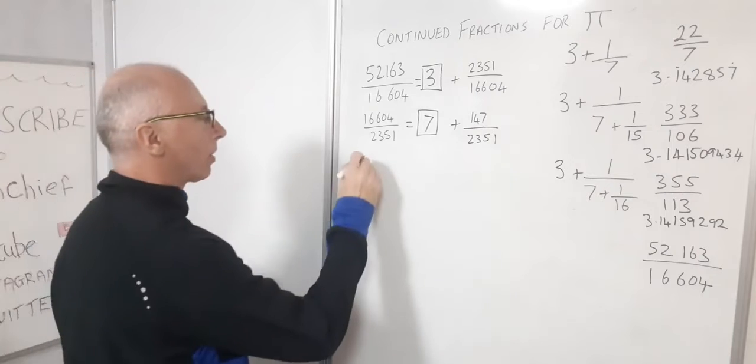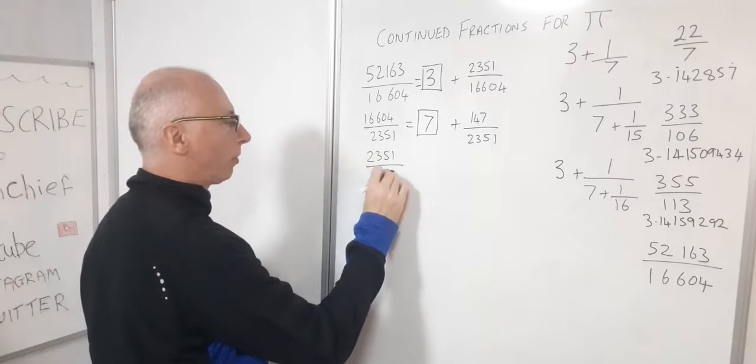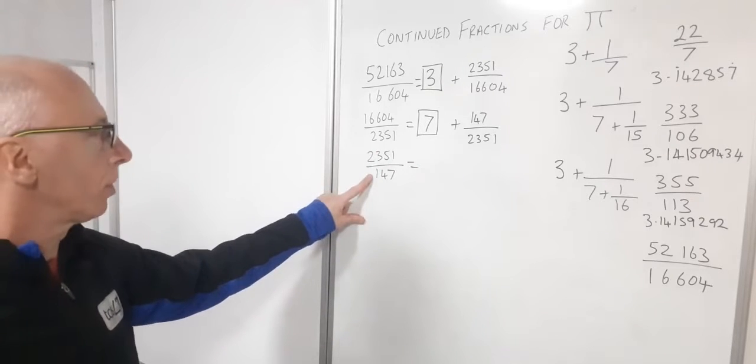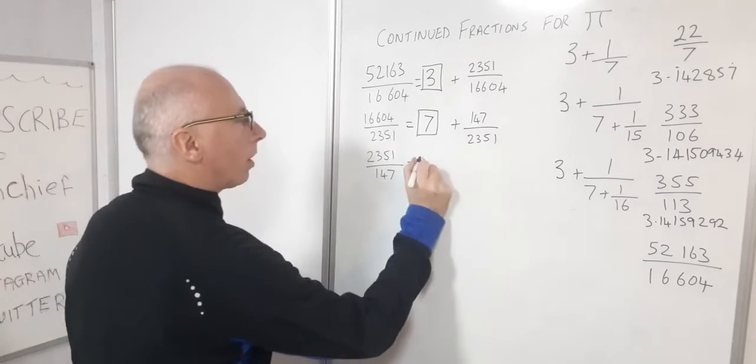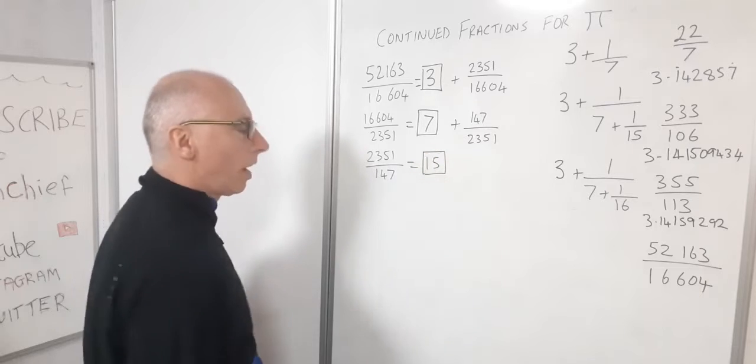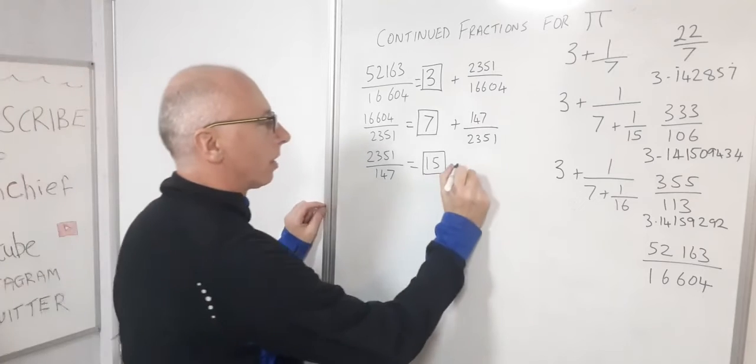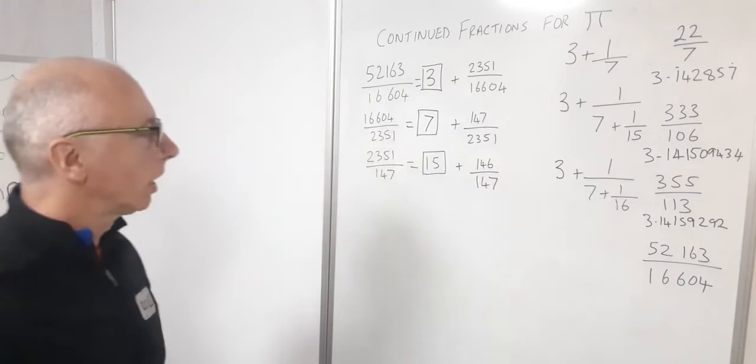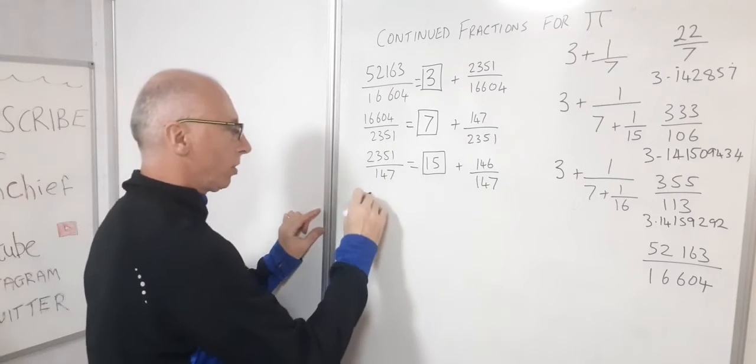Let's stick this over here as a reciprocal. 2351 divided by 147. So our integer for that is going to be 15. That's our integer, and then our leftover is going to be 146, so plus 146 out of 147. So we can see we're coming to the end now of our calculation.